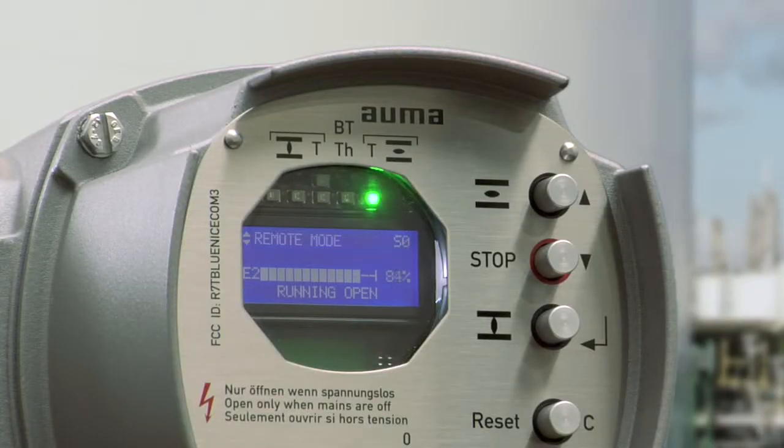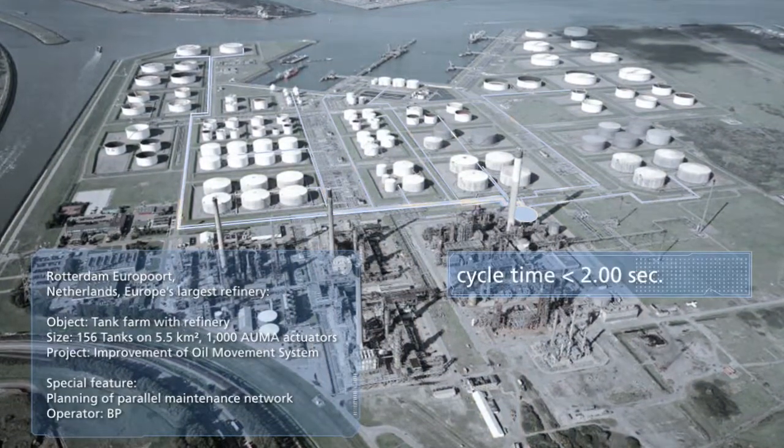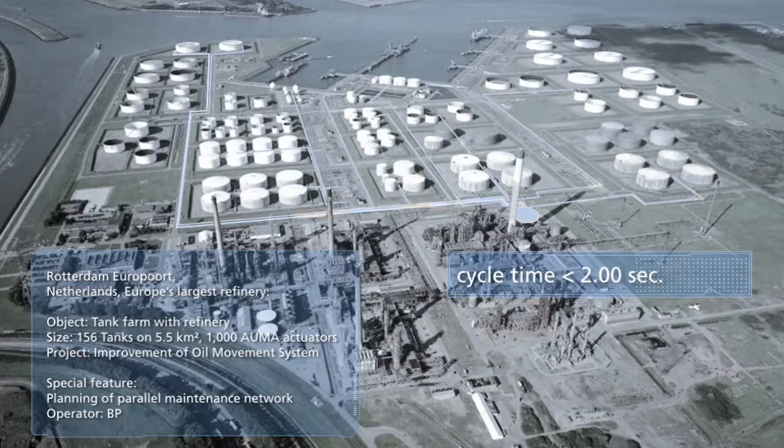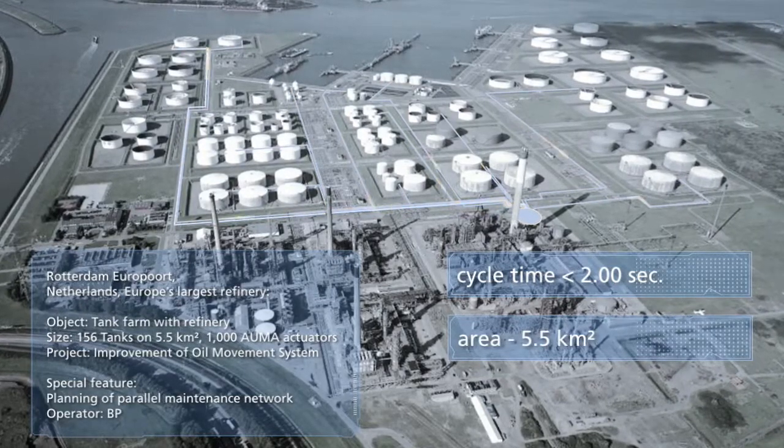It's easy to understand that the speed of the control processes is of significant importance for economic efficiency. With its field bus system, AOMA achieves cycle times of less than two seconds. Within no time, every valve in the plant, located on a plot of 5.5 square kilometers, is centrally controlled.